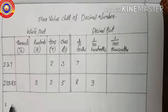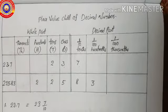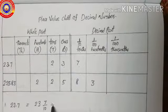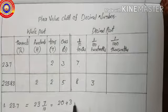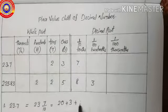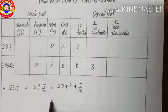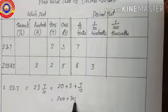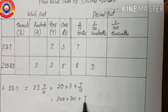Now, 23.7 in expanded form is 23 and 7 by 10, that is 20 plus 3 plus 7 into one-by-ten, which equals 2 into ten plus 3 into one plus 7 into one-by-ten.